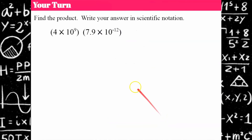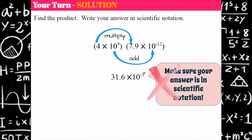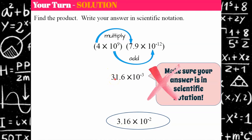Your turn — find the product and make sure your answer is in scientific notation. Welcome back. Multiplying the factors gives 31.6, then adding the exponents: 9 plus negative 12 is negative 3. But 31.6 is not in scientific notation, so we move the decimal point one place to the left. The factor got smaller by one digit, so the power of 10 gets larger by one: negative 2 is one larger than negative 3.